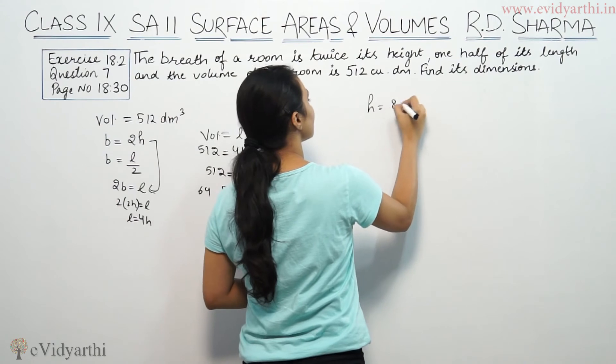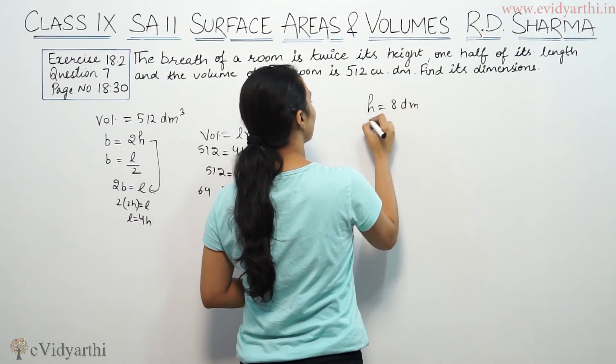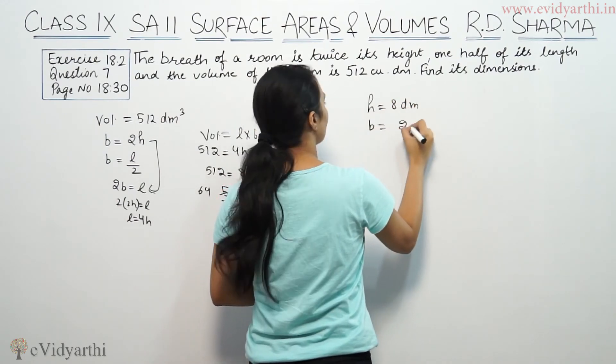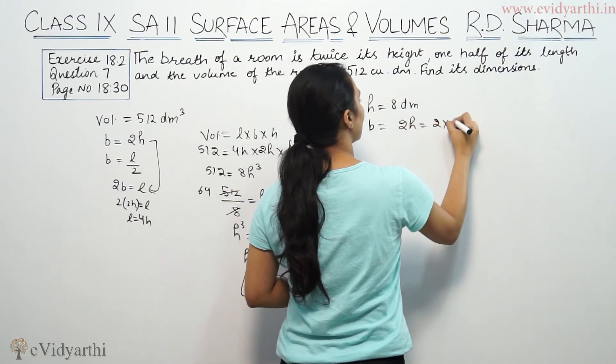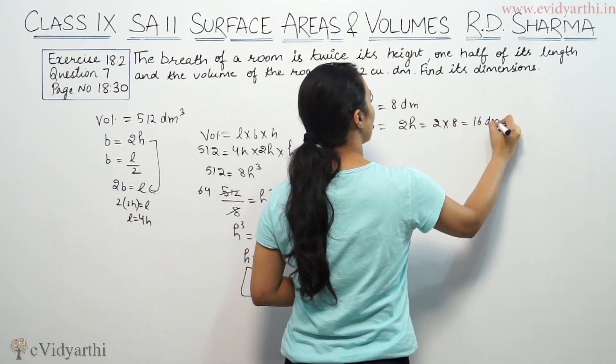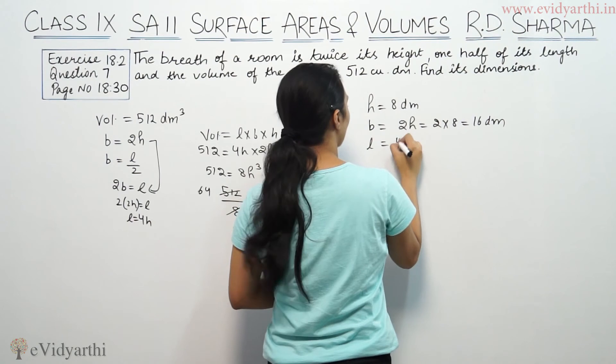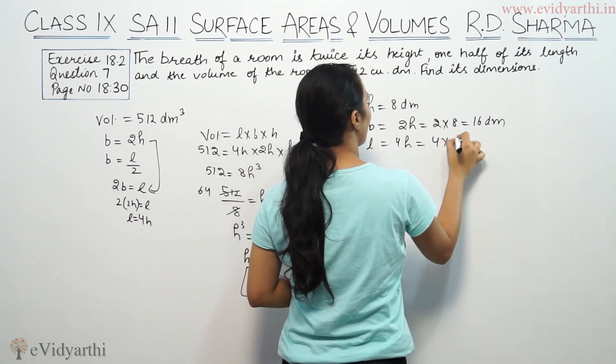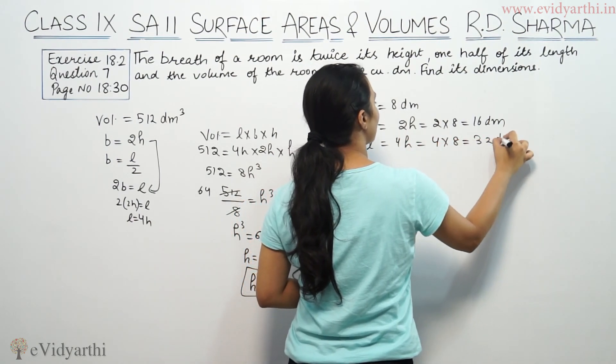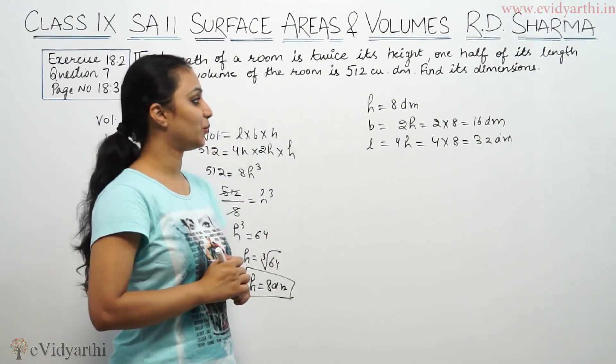So breadth is 2h, so breadth is 2 times 8, that means 16. And length is 4h, that means 4 times 8, that means 32. So these are the dimensions of the room.